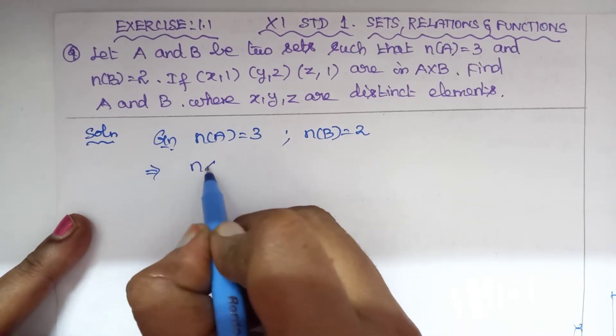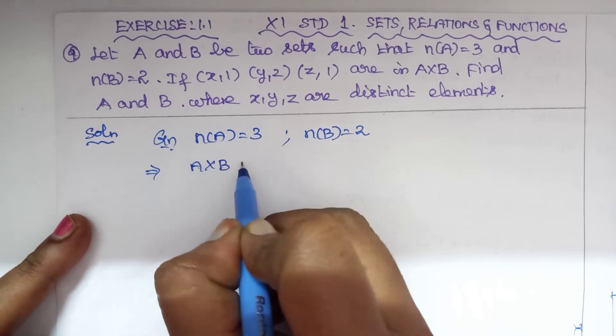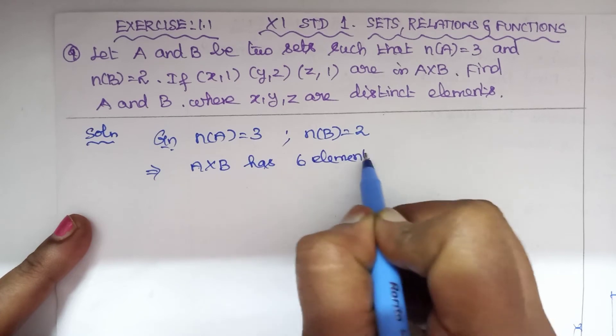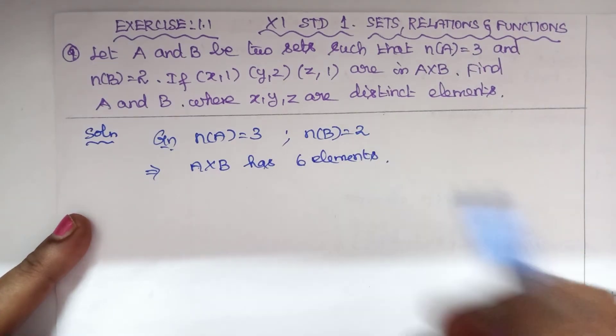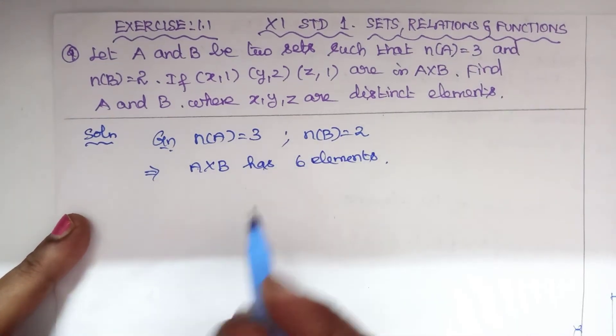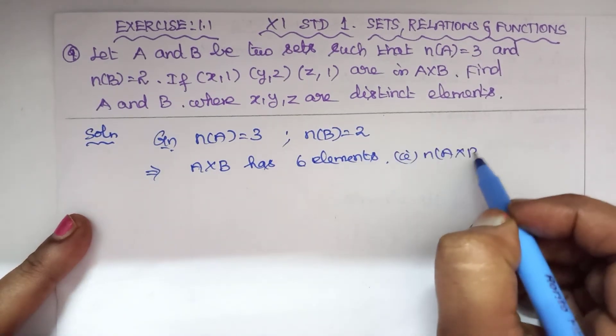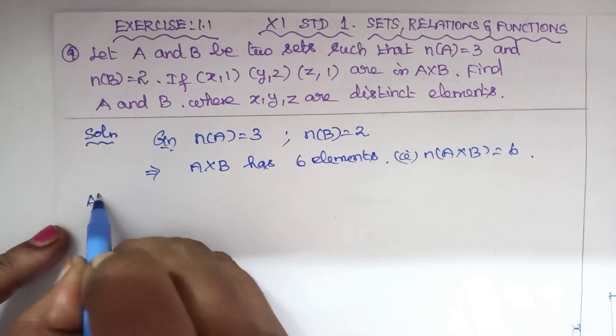A cross B has 6 elements - 6 ordered pairs. That is, n(A cross B) equals 6. Also given: